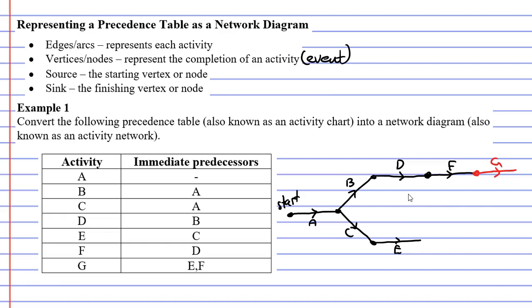And if it also comes after activity E, I need to finish activity E and label my edge as G as well. Now this is an issue because you're not allowed to have two edges with the same letter or the same activity. You're only allowed one edge per activity.